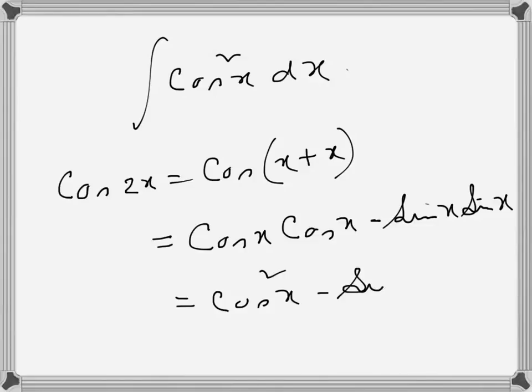So this is becoming cos²x and this is sin²x. Now I want to write in terms of cos²x only, because I have cos²x there. So cos²x minus (1 - cos²x). Instead of sin²x, I am writing 1 - cos²x. Going to the next page, so cos 2x...